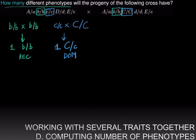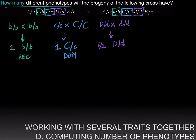In the third trait, we have a test cross: big D over little d crossed to little d over little d. Here, half the progeny will be heterozygotes having the dominant phenotype, and the other half will be homozygous for the little d allele, therefore having the recessive phenotype.